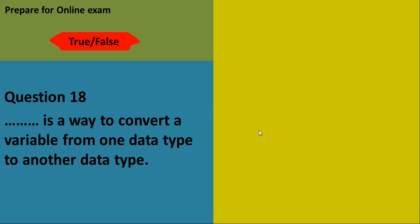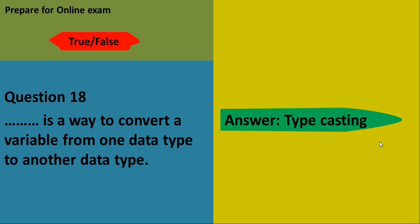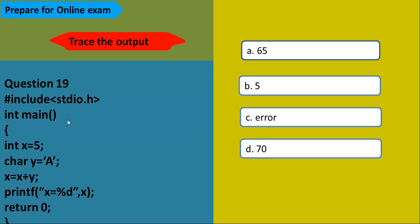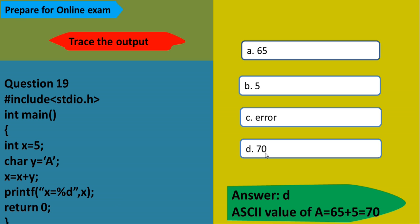Type casting is a way to convert a variable from one data type to another. Here, character Y equals 'A', and X equals X plus Y. The ASCII value of 'A' is 65, so 65 plus 5 is 70. We are printing an integer value, so the output is 70. The answer is D — 70.